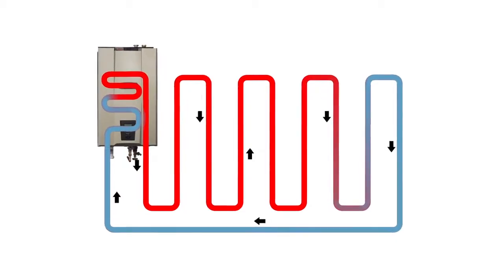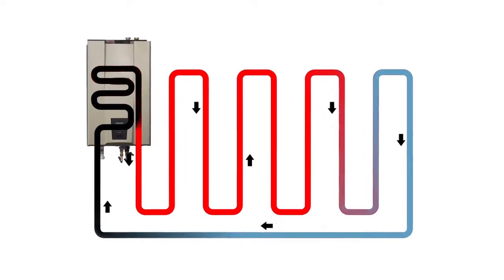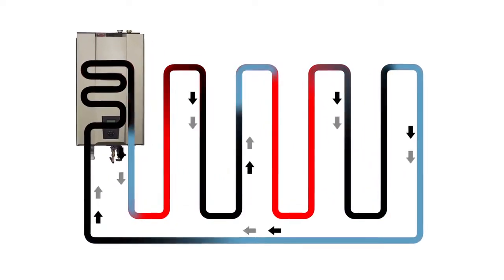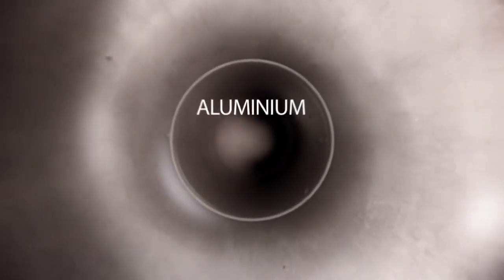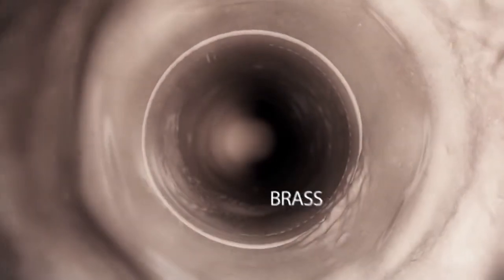Whether the boiler is old or new, the last thing any customer or installer wants is dirty water flowing around it. The water gets so dirty because as it circulates through the heating system it reacts with different metals which creates corrosion and over time builds up as sludge.